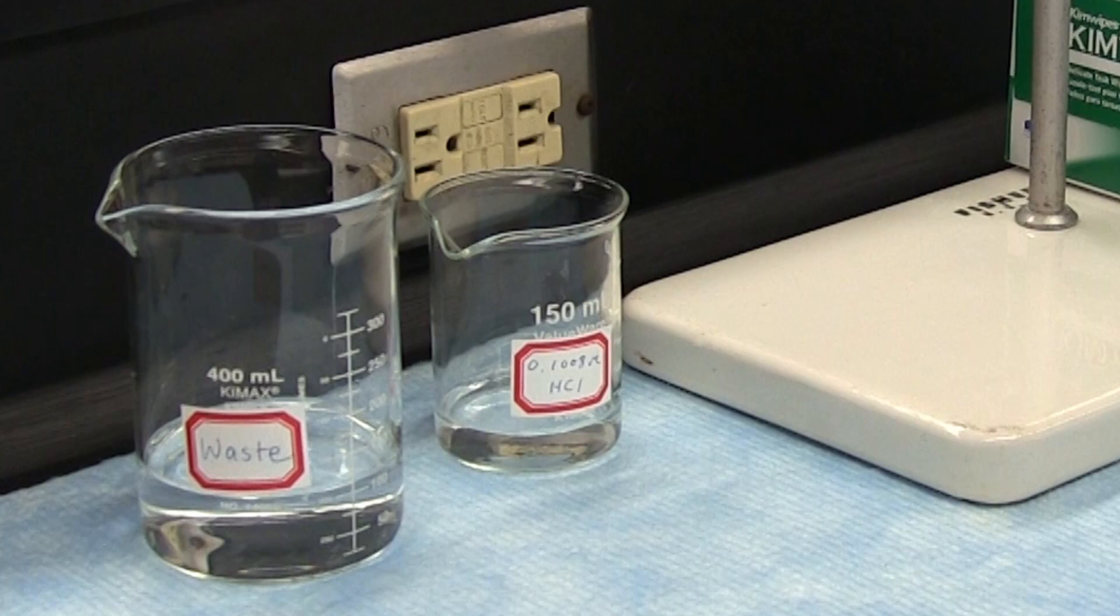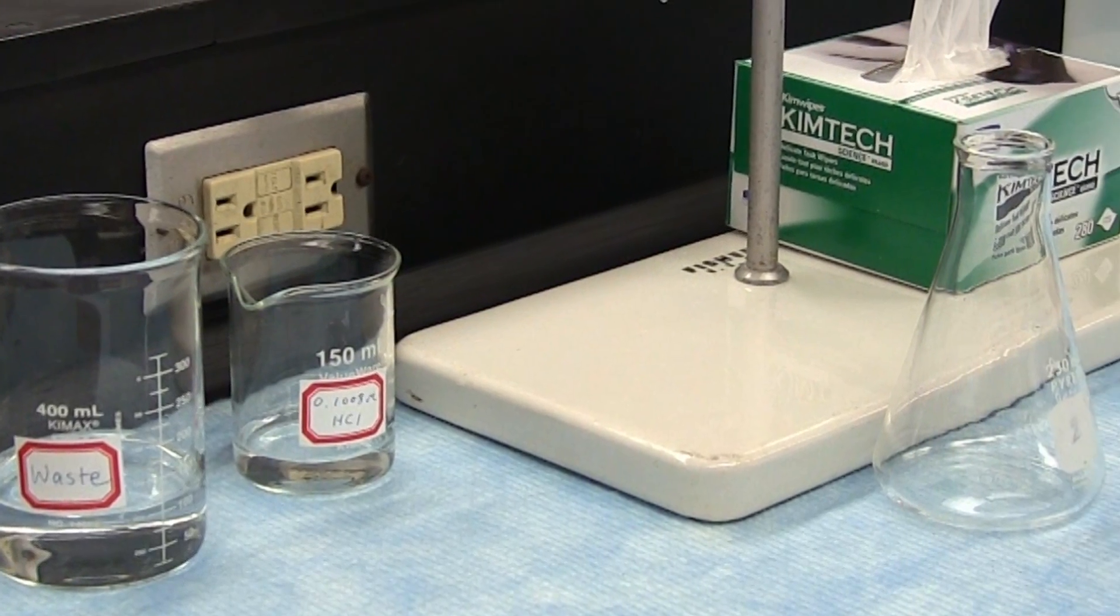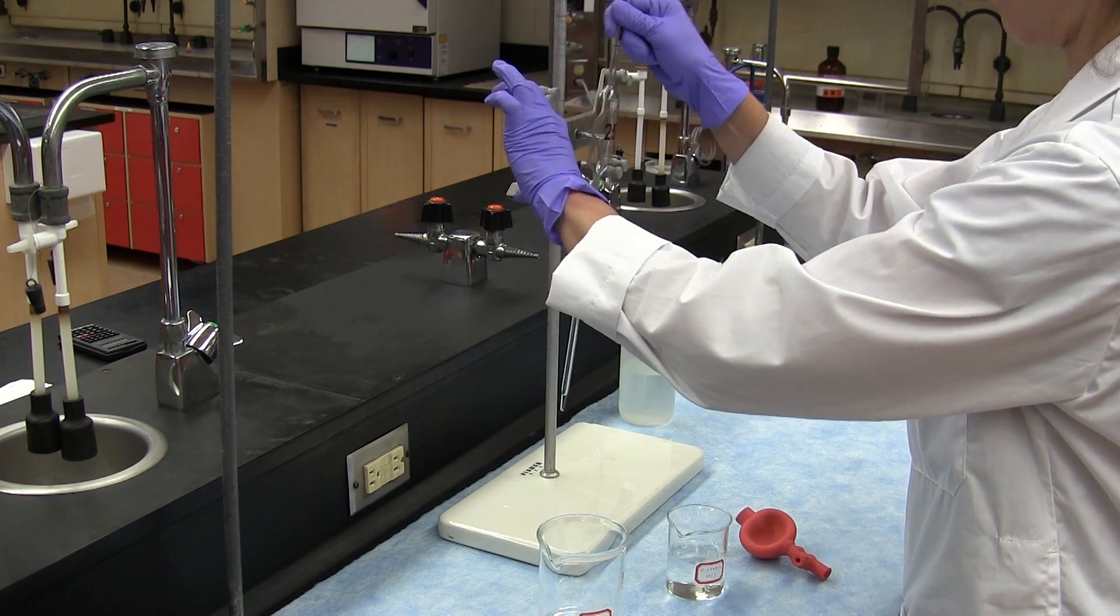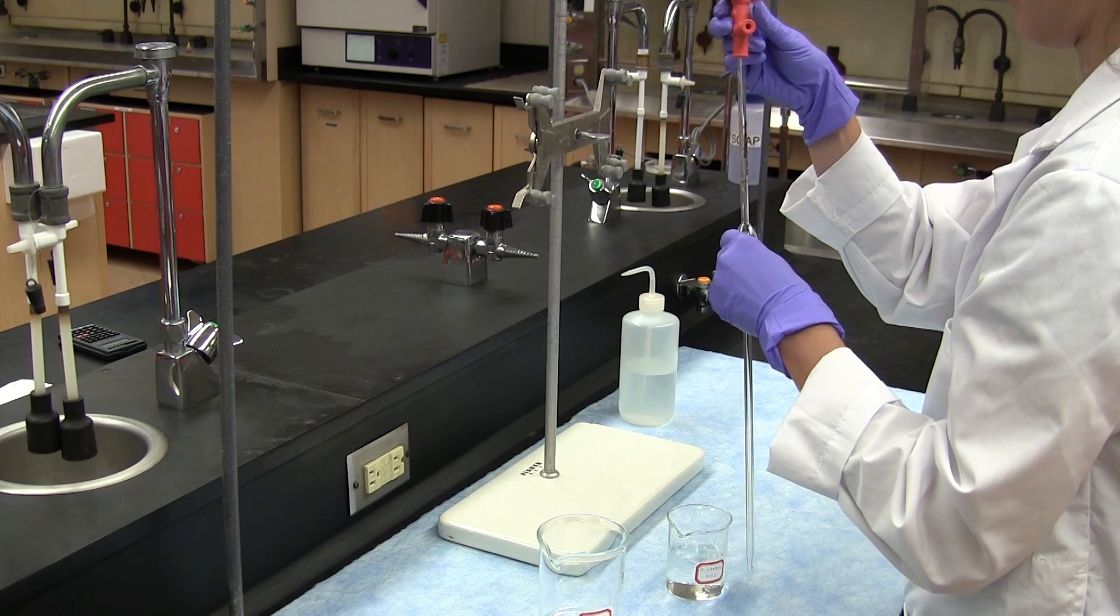We're going to transfer 25.00 milliliters of this standard solution to an Erlenmeyer flask. But first we rinse the pipette once or twice with the solution so as to remove any residual water from the previous cleaning.